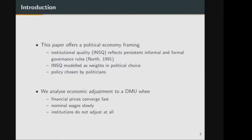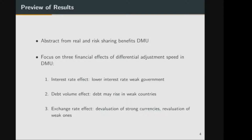Within this framework, we analyze the economic adjustment to a DMU — a common currency — where financial prices converge instantaneously. Interest rates and exchange rates immediately reflect the new monetary situation, while nominal wages adjust much more slowly, and institutions do not adjust at all, motivated by the data I showed. We abstract from any real and risk-sharing benefits in the DMU and focus on three financial effects of these differential adjustment speeds.